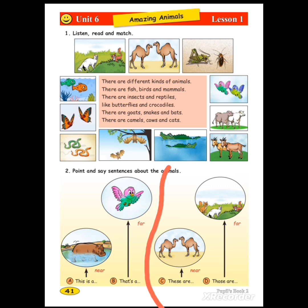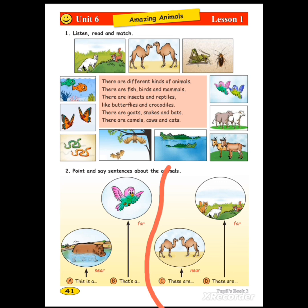When we talk about more than one thing, we use 'these' and 'those.' These are camels. Those are cats. These — those. These are camels. Those are cats.